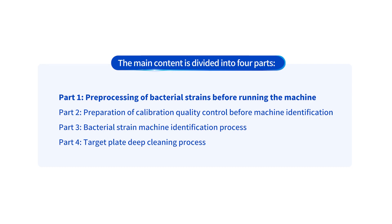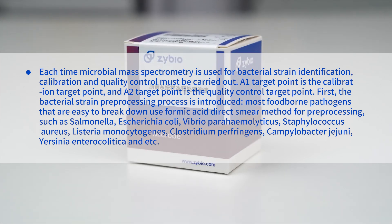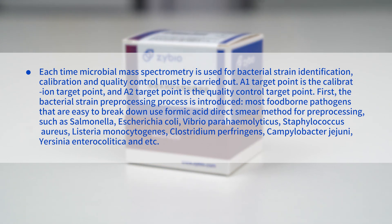Part 1: Pre-processing of bacterial strains before running the machine. Each time microbial mass spectrometry is used for bacterial strain identification, calibration and quality control must be carried out. A1 target point is the calibration target point and A2 target point is the quality control target point.